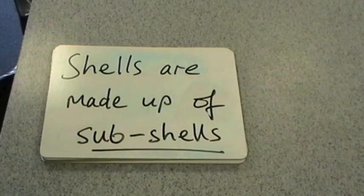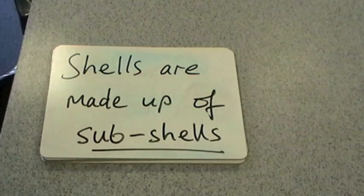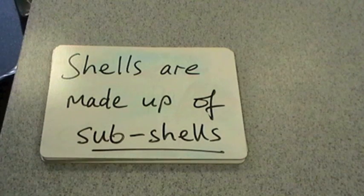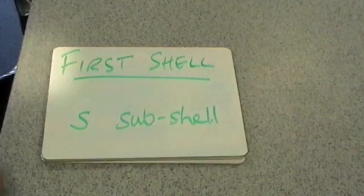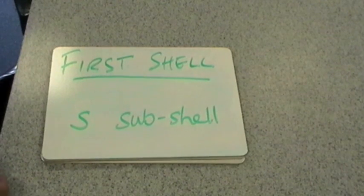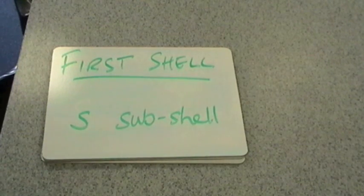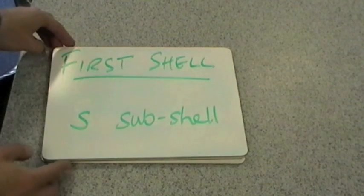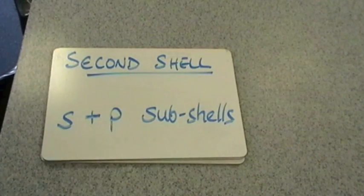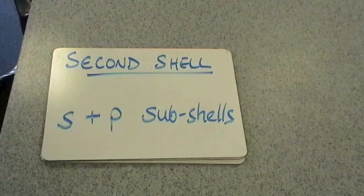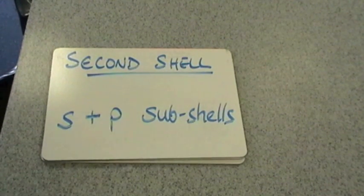The first thing we need to explain is that shells are actually made up of sub-shells. So I'm just going to show you the first 4 shells, that's all you need to know for A level. So the first shell contains the S sub-shell, and that's it. The second shell is made up of an S sub-shell and a P sub-shell. So the second shell has 2 sub-shells, S and P.